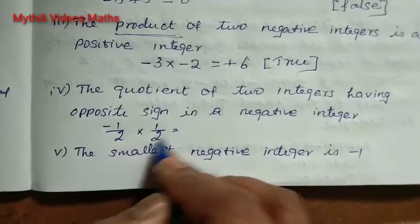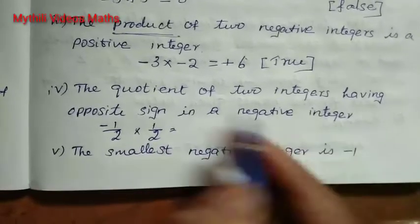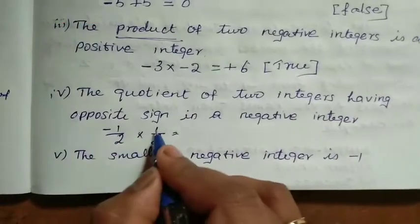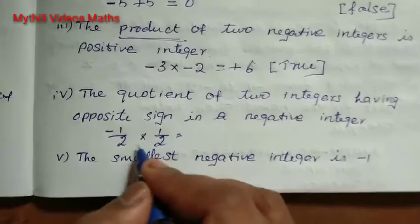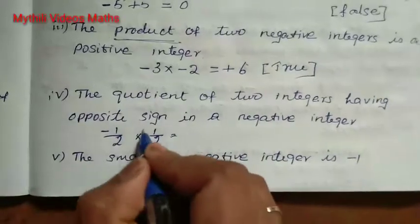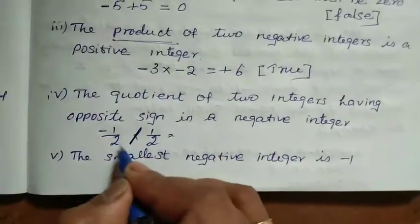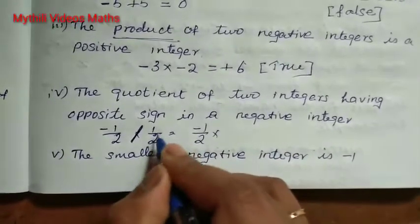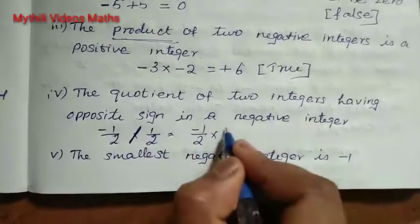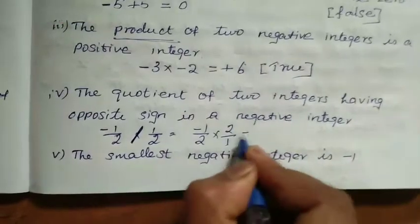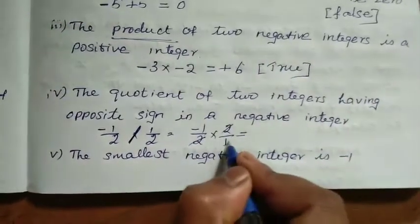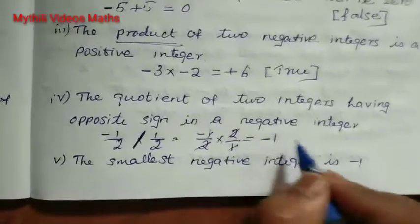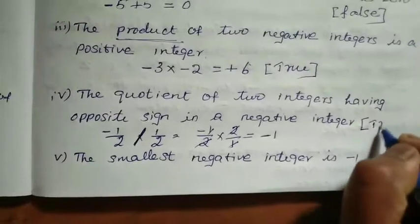One has a plus sign and the other has a minus sign. So the quotient would be a negative integer. For example, take minus 1 by 2. Its reciprocal is 2 by 1. When we multiply, 2 and 2 cancel and we get minus 1. So the result is negative, meaning this statement is true.